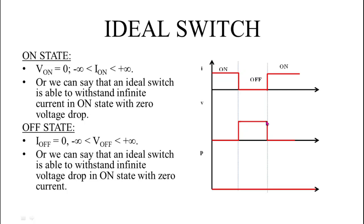An ideal switch has turn-on and turn-off time equal to zero, meaning its transition from on state to off state is very fast, without any delay. Losses in these switches are equal to zero because losses are equal to the product of voltage and current. Since either voltage or current is zero throughout the time axis, switching losses and power losses in the ideal switch are zero.